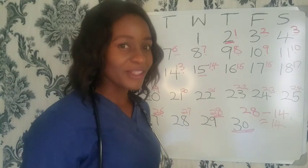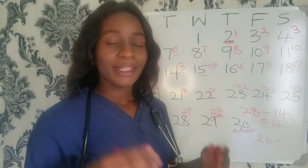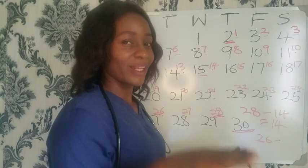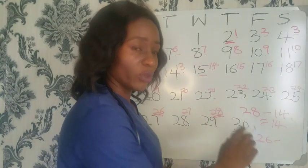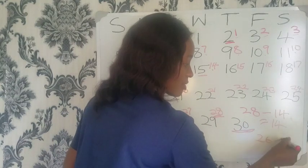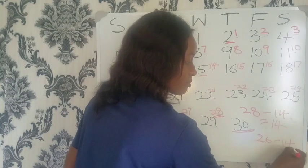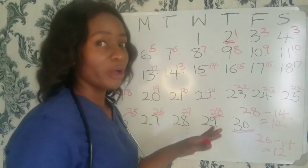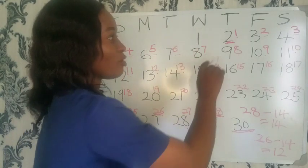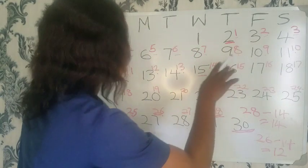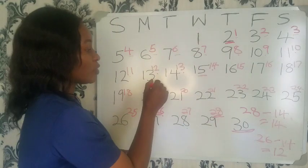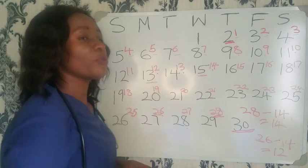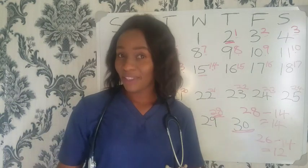Now let's calculate for a woman with a 26-day menstrual cycle. When you subtract 14 from 26, you get 12. That means on day 12 she will ovulate. From the calendar, day 12 falls on the 13th of November — that is her ovulation day.